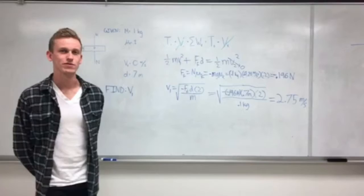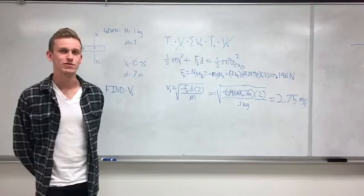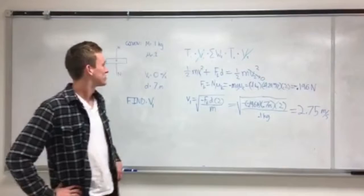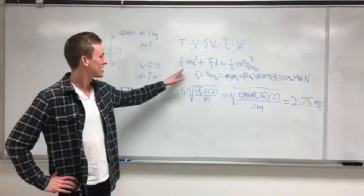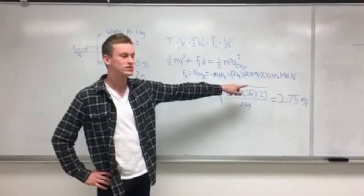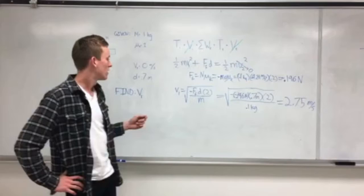For the first part of our problem, we decided to find the maximum velocity that you can throw your phone across a 0.7 meter table without it falling off. We're using the conservation of energy equation: kinetic energy plus the force of friction times the distance it slides equals the final velocity, which will be zero. Calculating the force of friction, we find it to be negative 0.196 newtons using a coefficient of kinetic friction of 0.2. We find that the initial velocity is 2.75 meters per second.